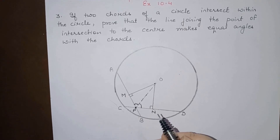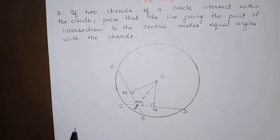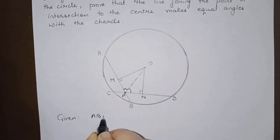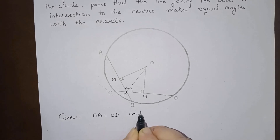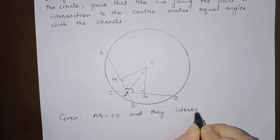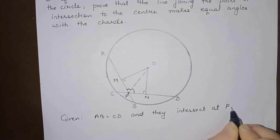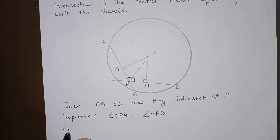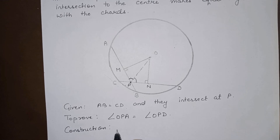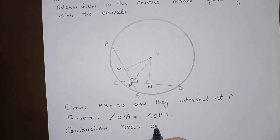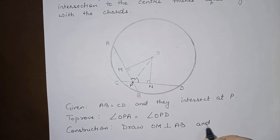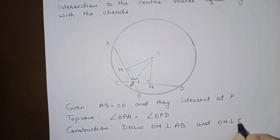Given: AB is equal to CD and they intersect at P. For this we will do one construction: draw OM perpendicular on AB and ON perpendicular on CD.